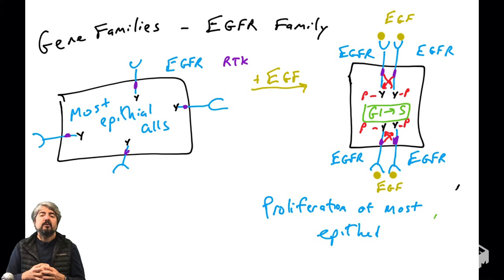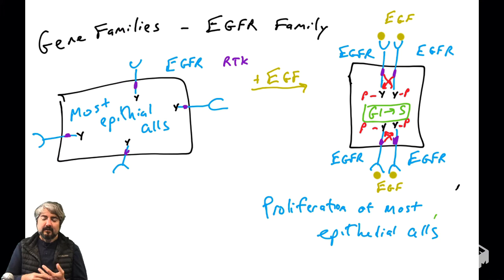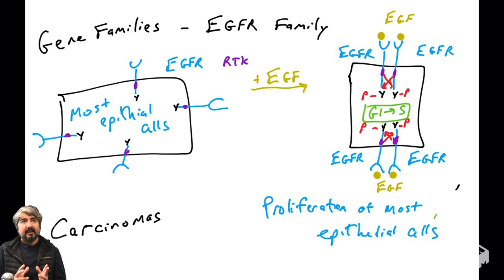This signaling is very critical for cells when we need more cells — when we're growing, when we have tissue damage, when old epithelial cells die or come off any of the structures in our body. We need more cells. This signaling helps get cells to go through the cell cycle and mitosis to make more cells. It's a very important signaling pathway for proliferation of most epithelial cells in the body.